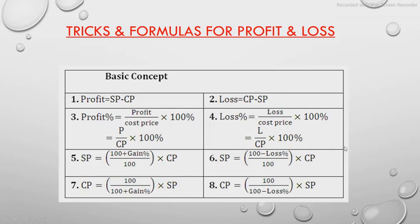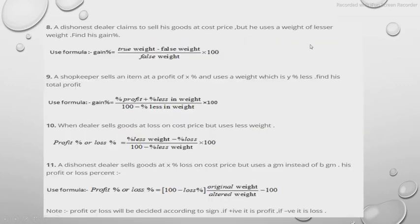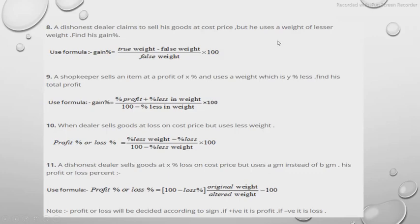Next are some tricks for important topics generally asked in competitive examinations. The first is a dishonest dealer who claims to sell his goods at cost price but uses a false weight of lesser weight. In this case, you can find his gain percent by the formula: Gain% = ((True weight − False weight) / False weight) × 100.